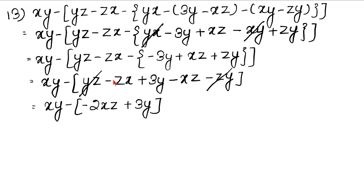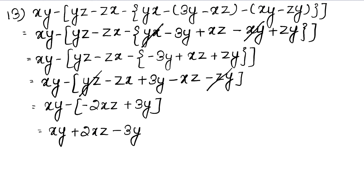Now we open the bigger bracket. The sign inside is minus, so signs change inside, giving plus 2XZ minus 3Y. There are no like terms, so nothing is added. This is the answer. The terms can be written in either order and the answer is correct.